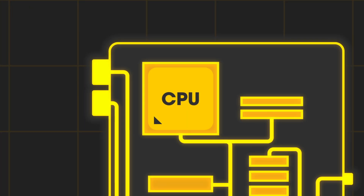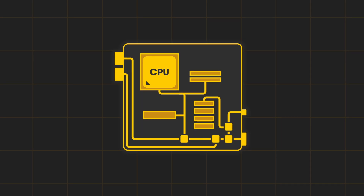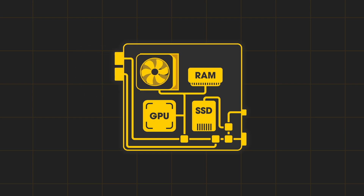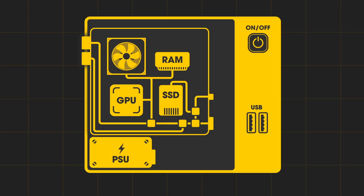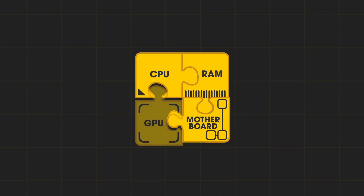Let's recap. A CPU sits on a motherboard that connects it to all other components such as RAM, storage, and optionally a GPU. On top of the CPU goes the cooler. The motherboard is fixed in a case with a power supply unit supplying electricity. All components need to be compatible with each other, naturally.